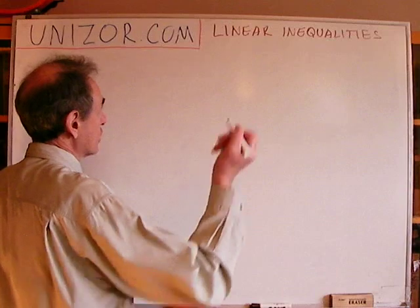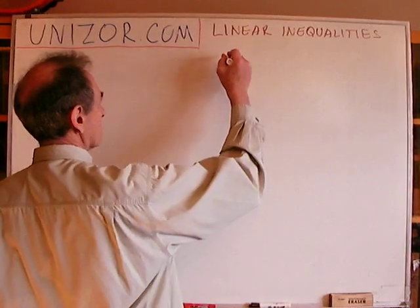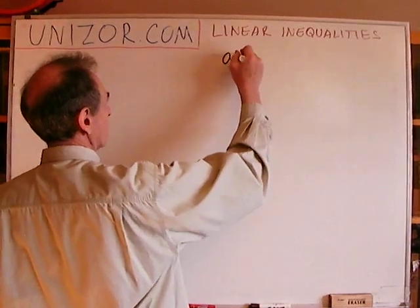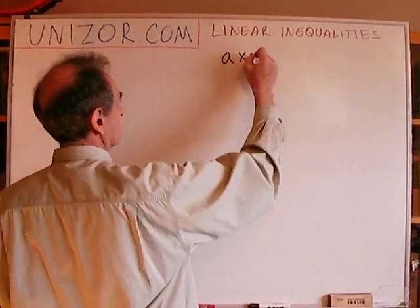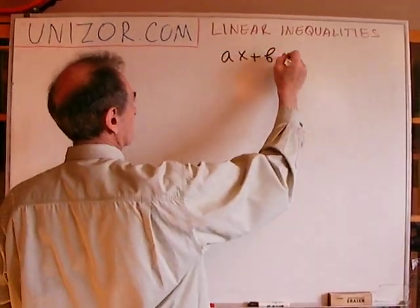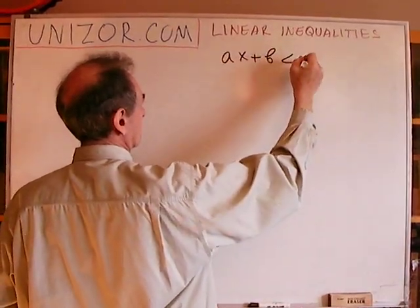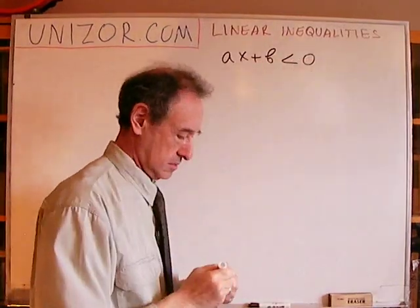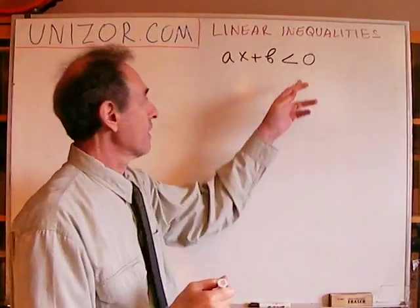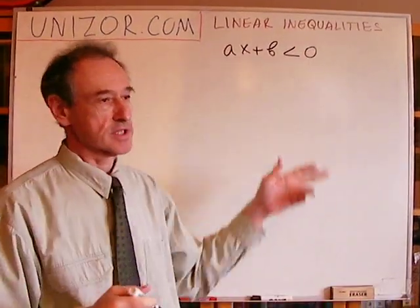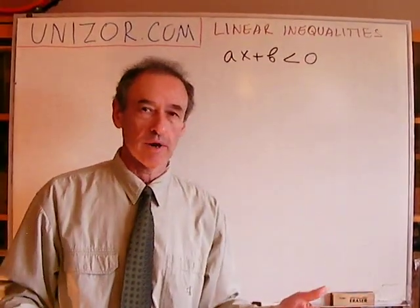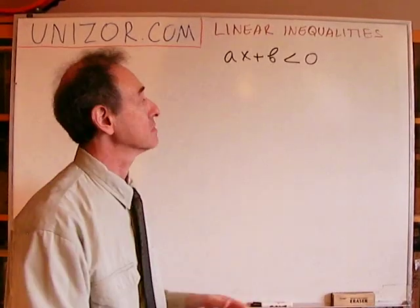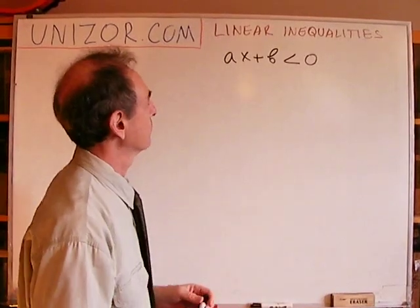A general form can be something like ax plus b less than zero, or any other inequality sign, like greater than, less than or equal, greater than or equal, etc.